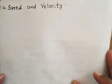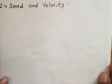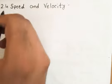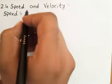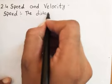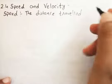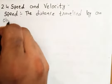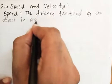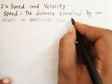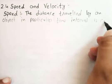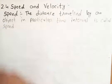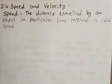So what is speed? We will start with the simple definition. The distance traveled by an object in a particular time interval is called speed. So if we are given the time interval and the distance of its journey, that is called speed.